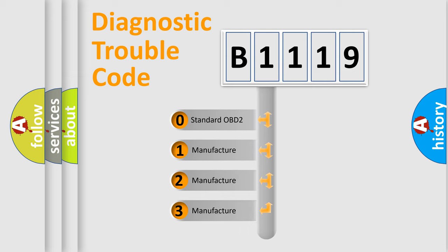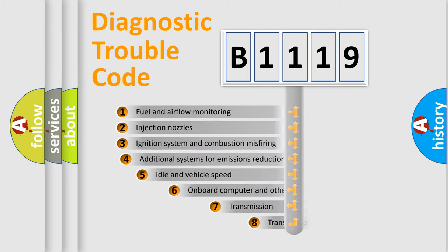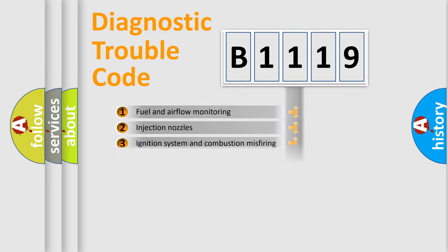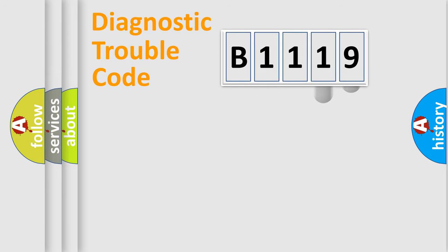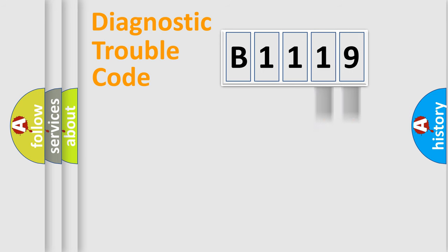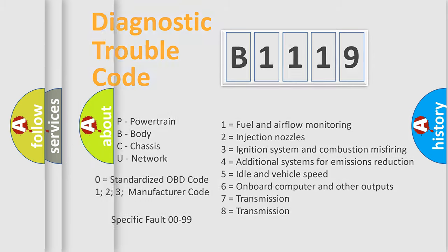If the second character is expressed as zero, it is a standardized error. In the case of numbers 1, 2, or 3, it is a manufacturer-specific error. The third character specifies a subset of errors. This distribution is valid only for the standardized DTC code. Only the last two characters define the specific fault of the group, and this division is valid only when the second character is zero.